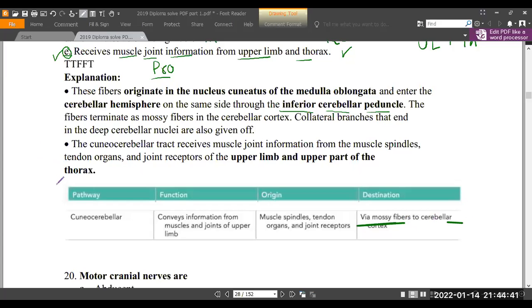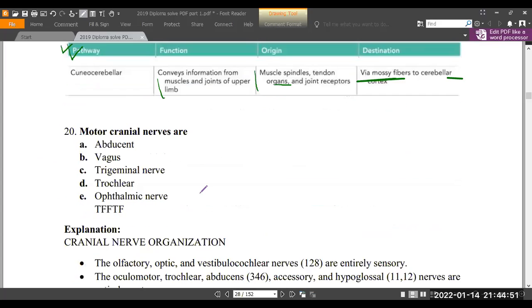This is about the organization of cranial nerves - their origin, function, and destination. Let's look at an easy question: motor cranial nerves. Pure motor cranial nerves - just practice. Pure sensory cranial nerves include the olfactory. Mixed nerves are mixed.